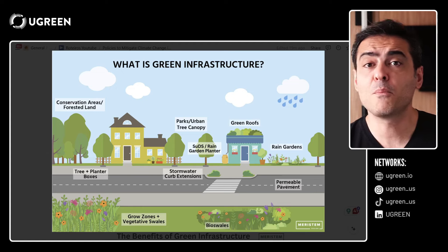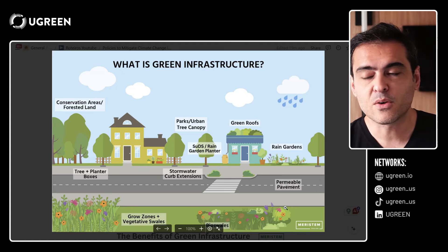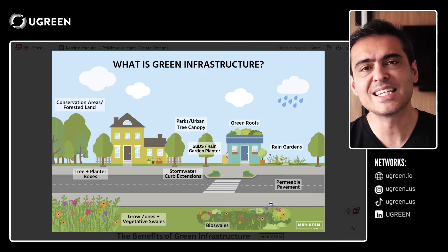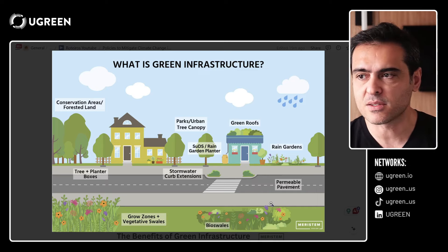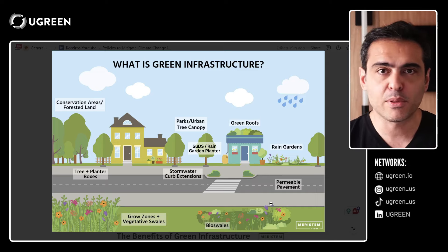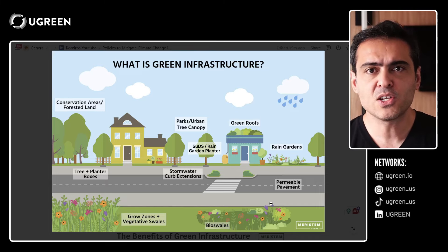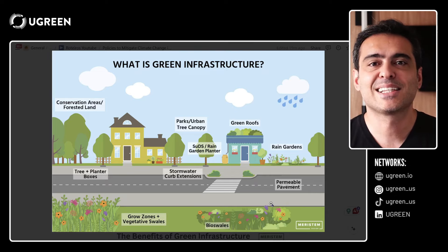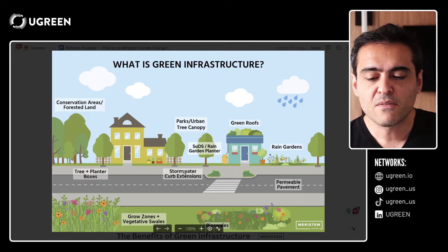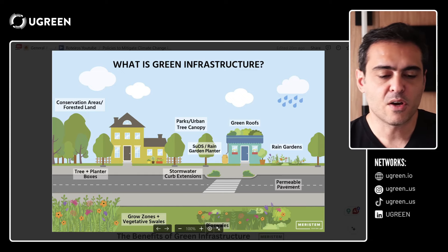This picture is from Maristem Design — you can see their reference in the corner. Green infrastructure is this network of natural spaces designed to provide benefits for people and the planet within the city. It will improve air quality, bring water purification, create recreation spaces, and of course mitigate climate change. These are some of the features of green infrastructure that I'm going to detail.